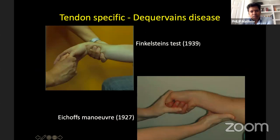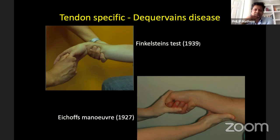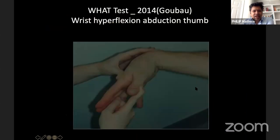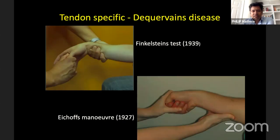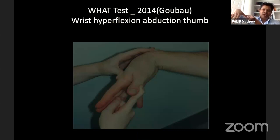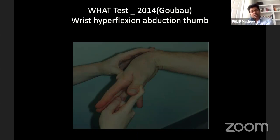Finkelstein's test was originally described by pulling on the thumb and ulnar deviating the wrist; Eichhoff's maneuver puts the thumb in the palm with fingers around the thumb and ulnar deviates. Pain in the radial border usually indicates a positive de Quervain's test. More recently, the WHAT test has been described, where you hyperflex the wrist, abduct the thumb, and resist abduction — this has been shown to be more accurate for diagnosing de Quervain's disease.